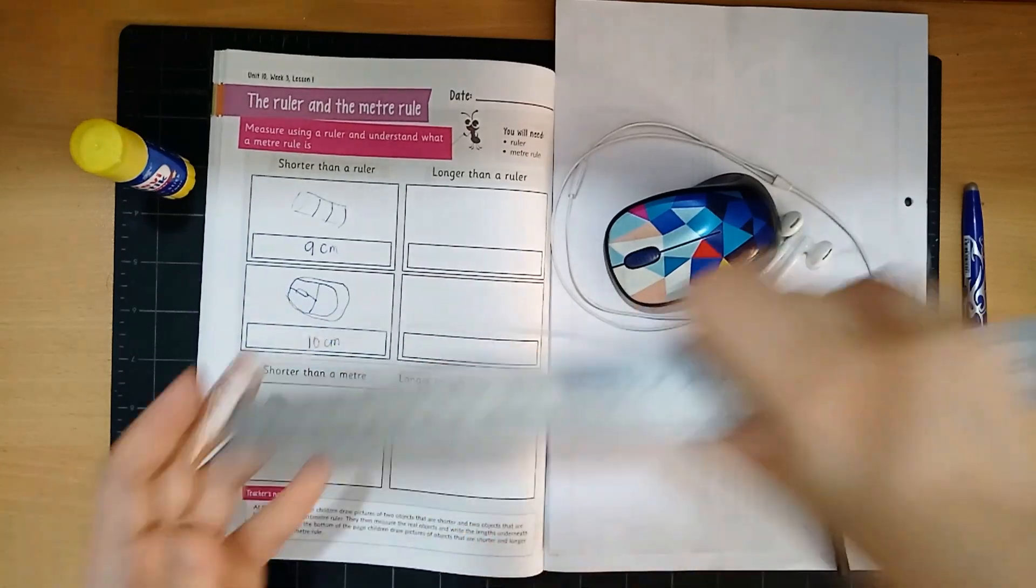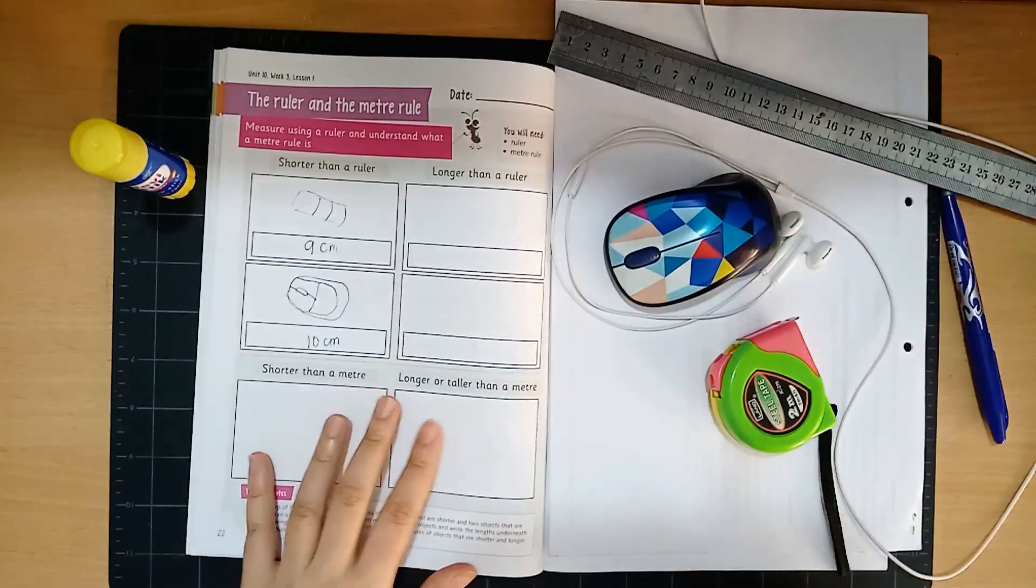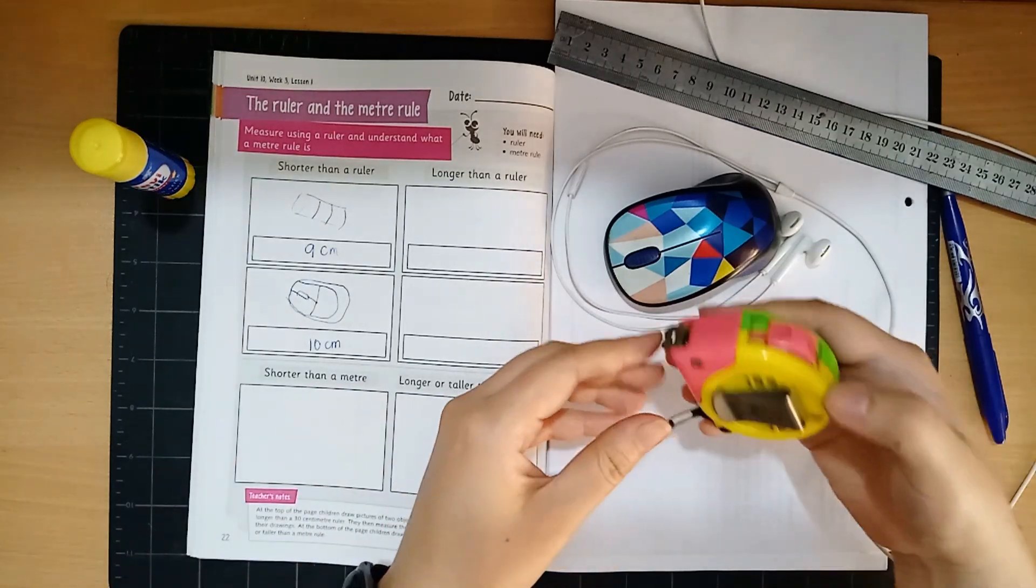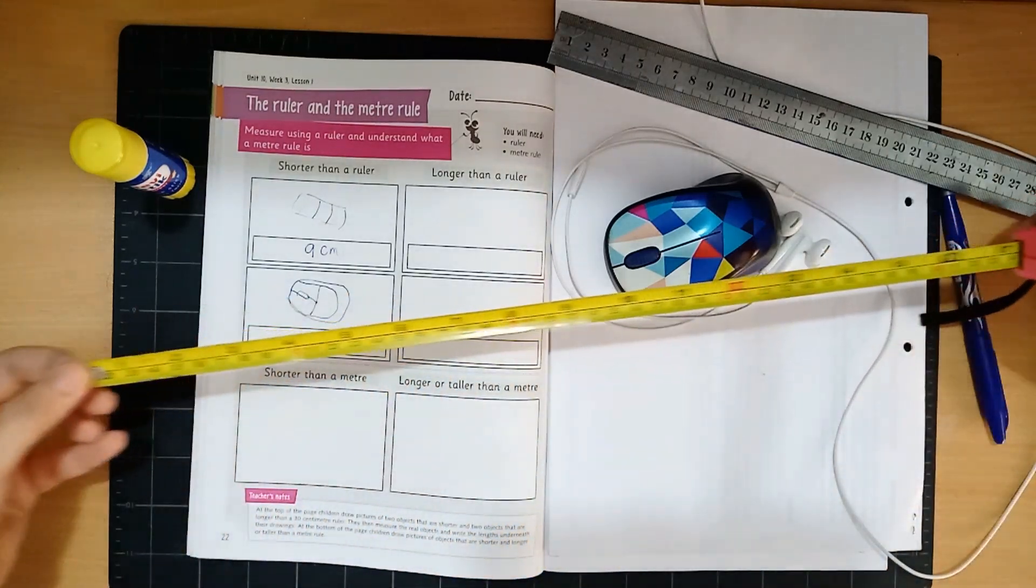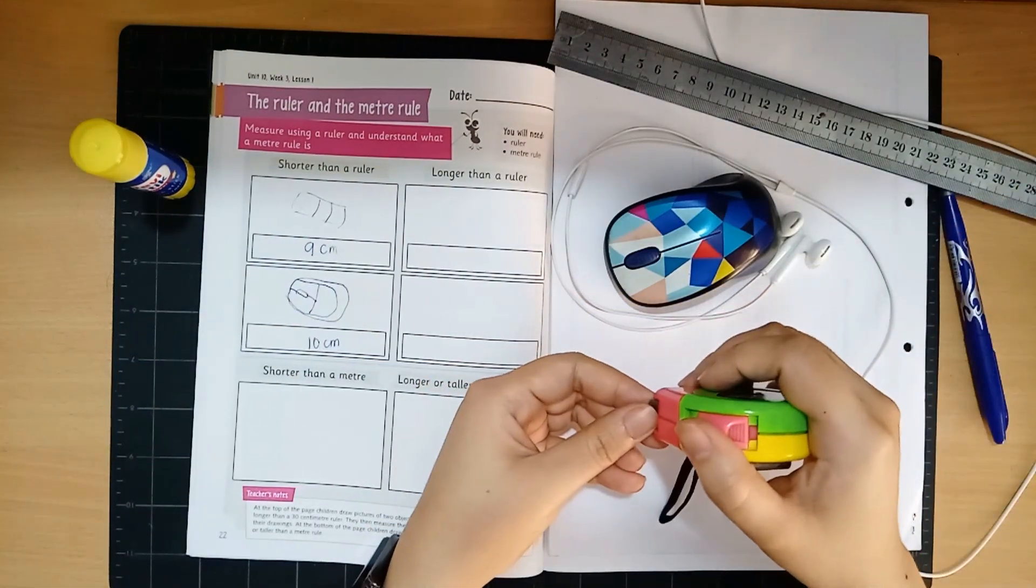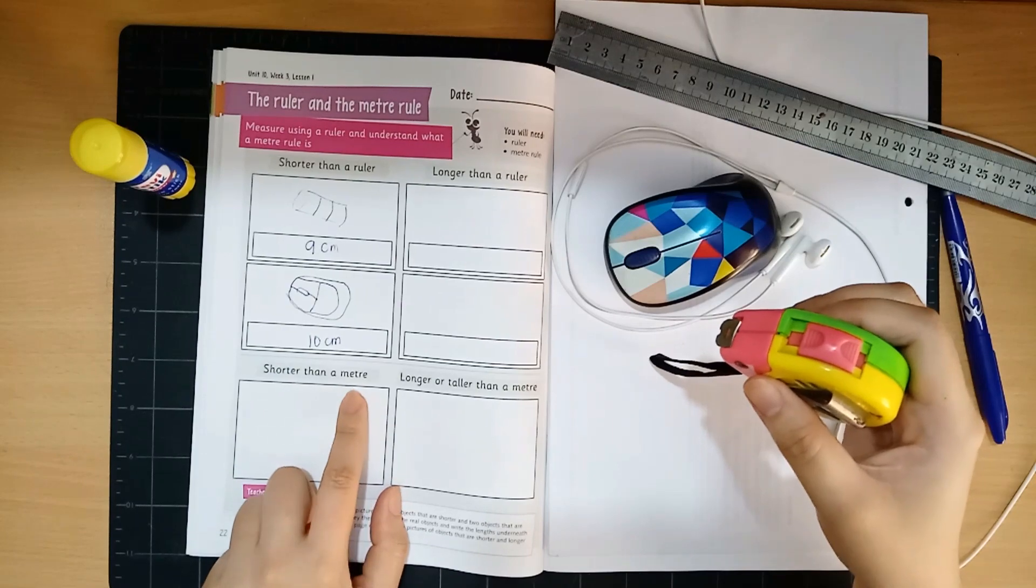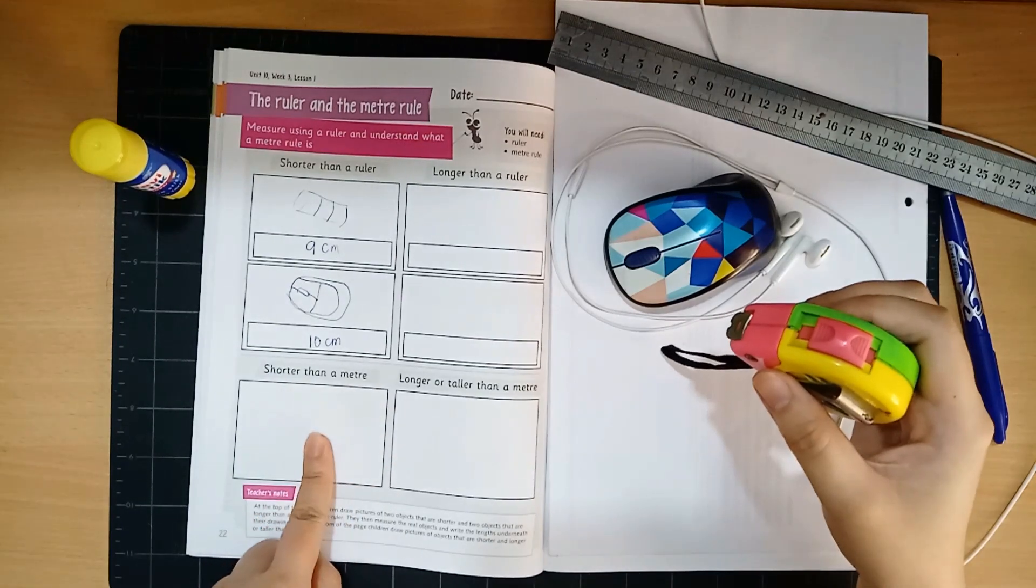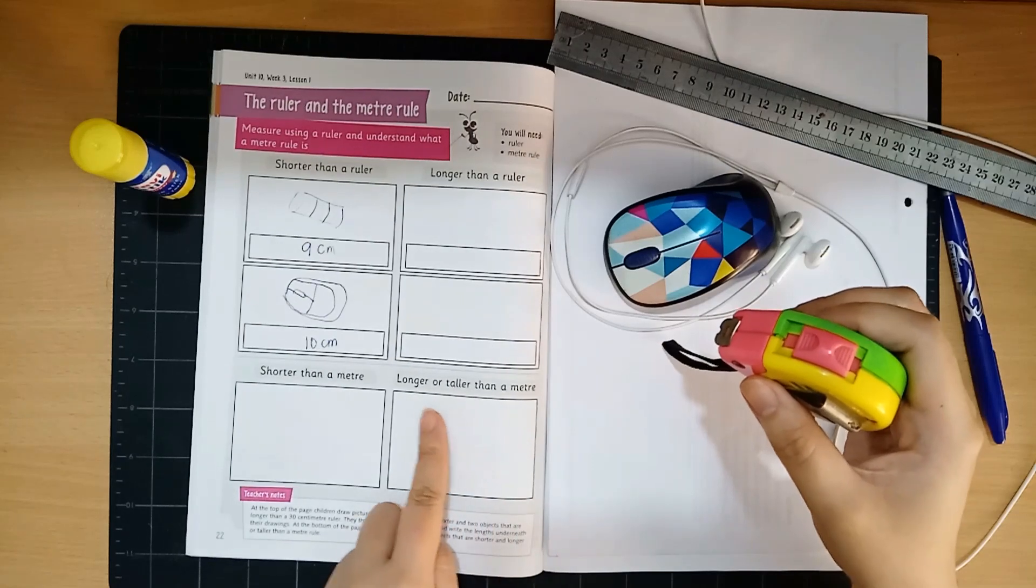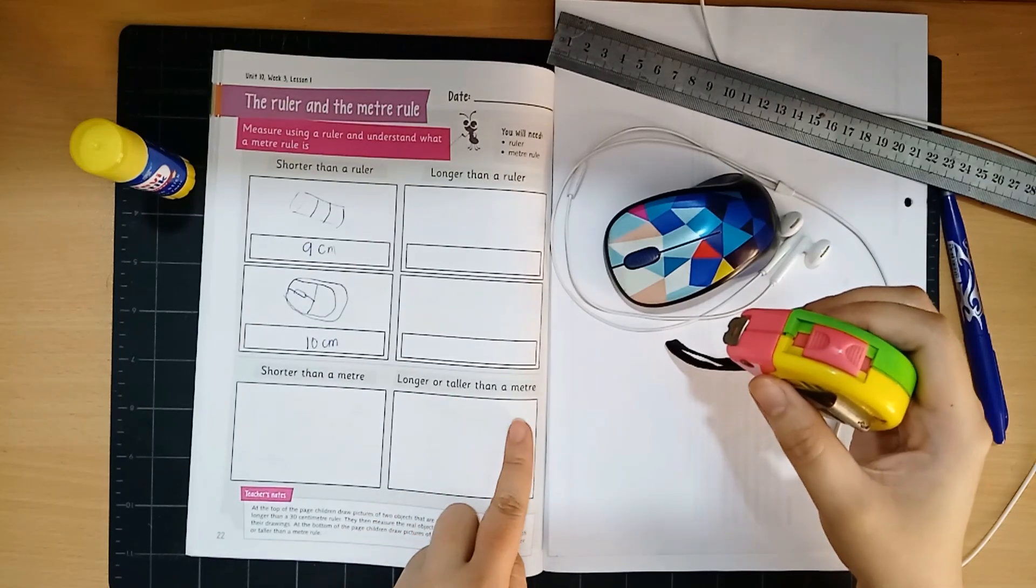Now this part is when you use a meter rule. So we can use this meter ruler and you go around your house and look for things that is shorter than a meter. Then you're going to draw. Then you look for things a thing that is longer or taller than a meter.